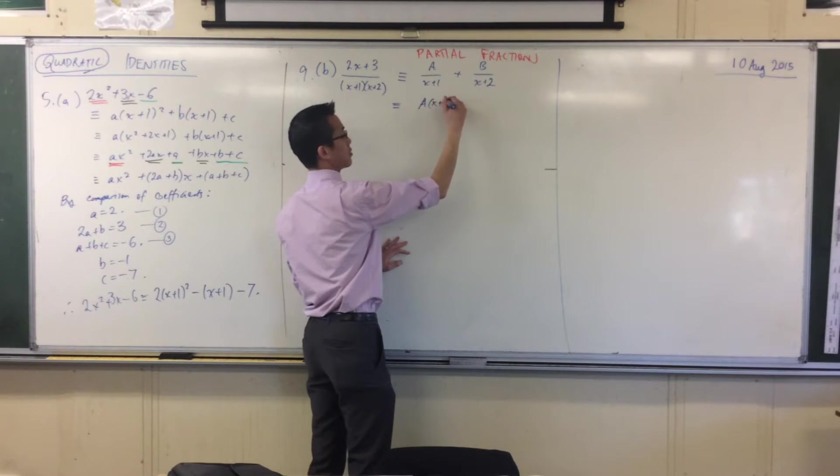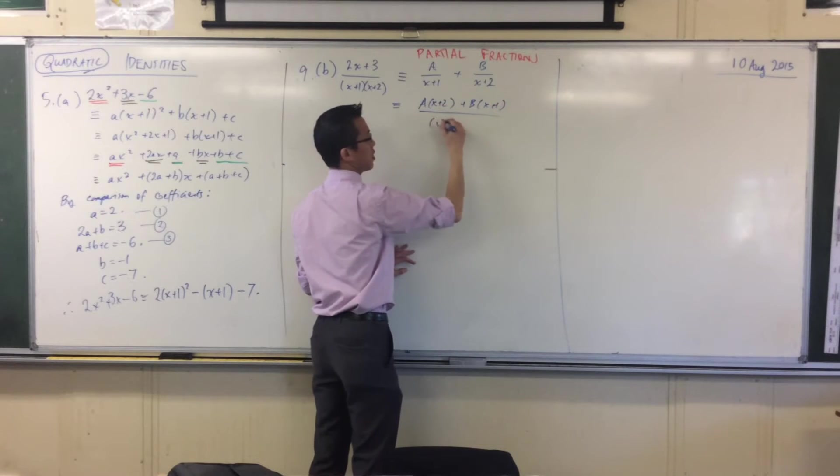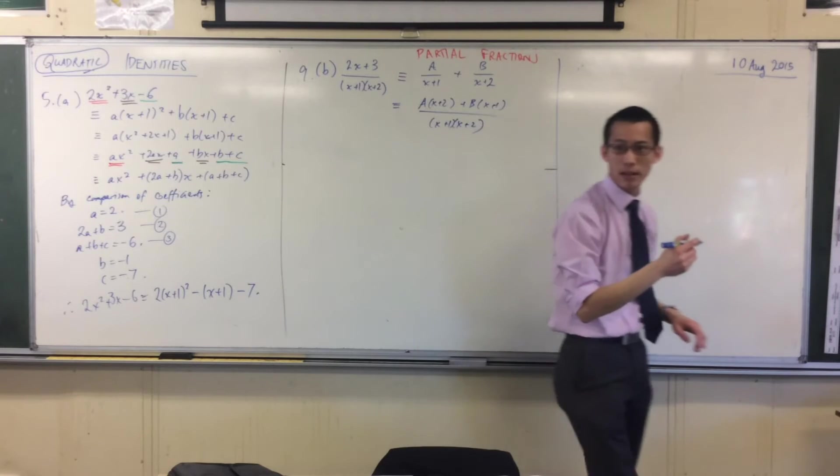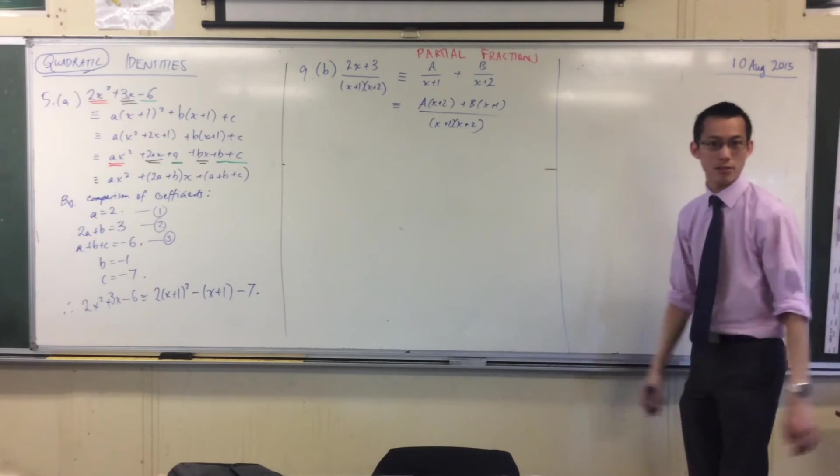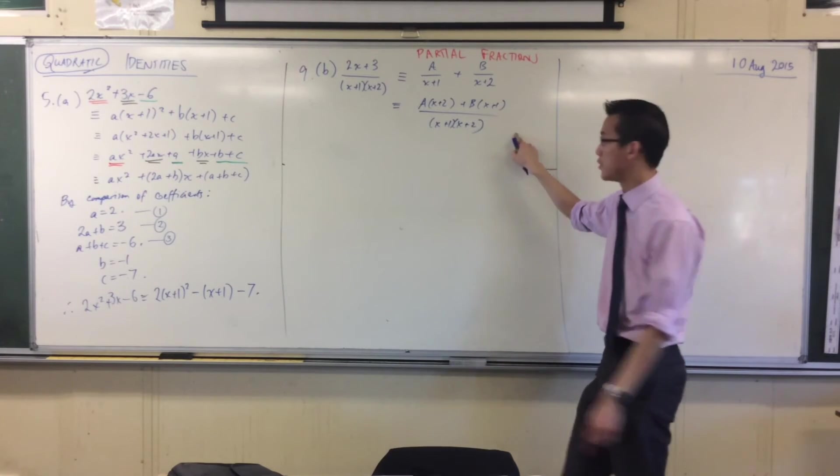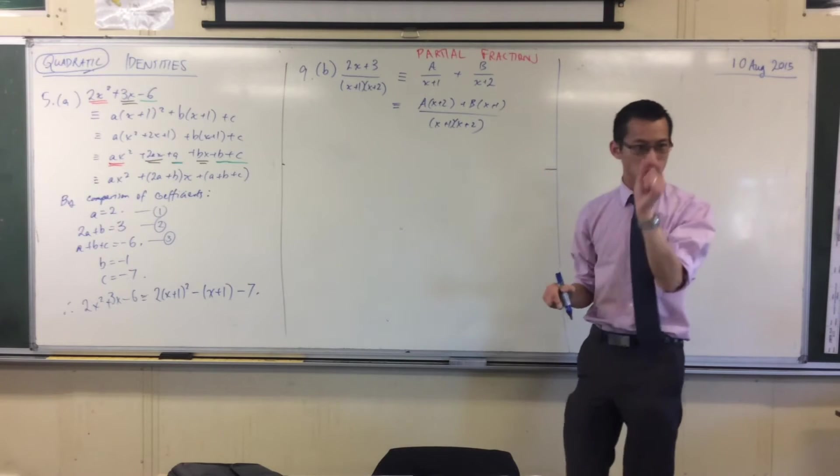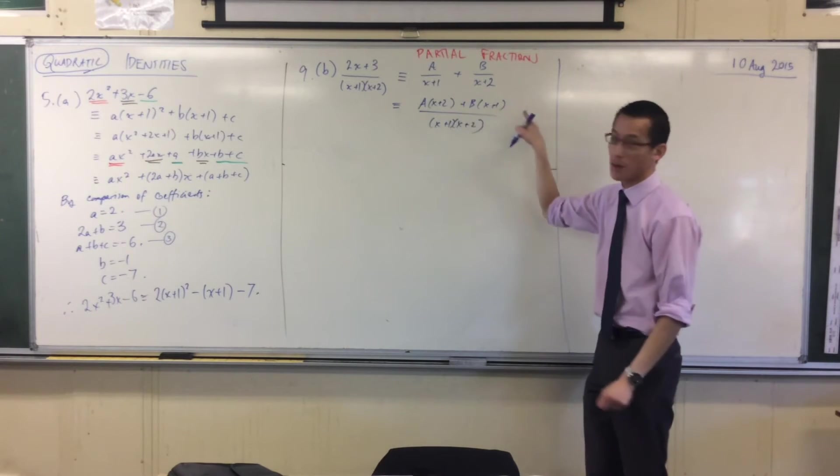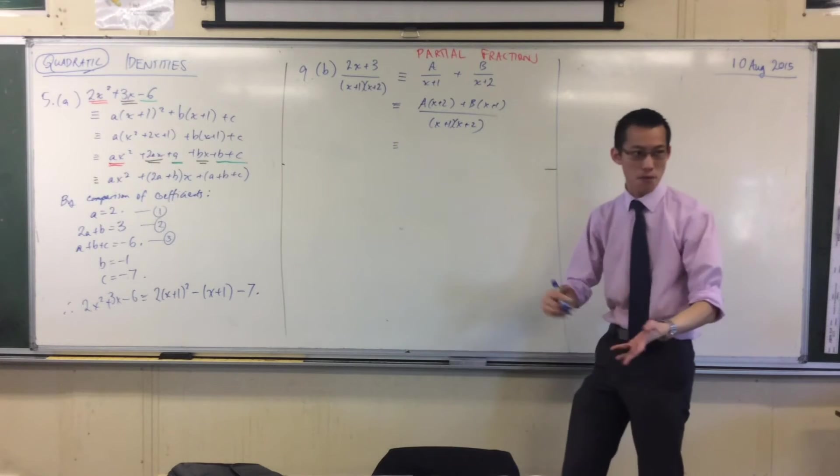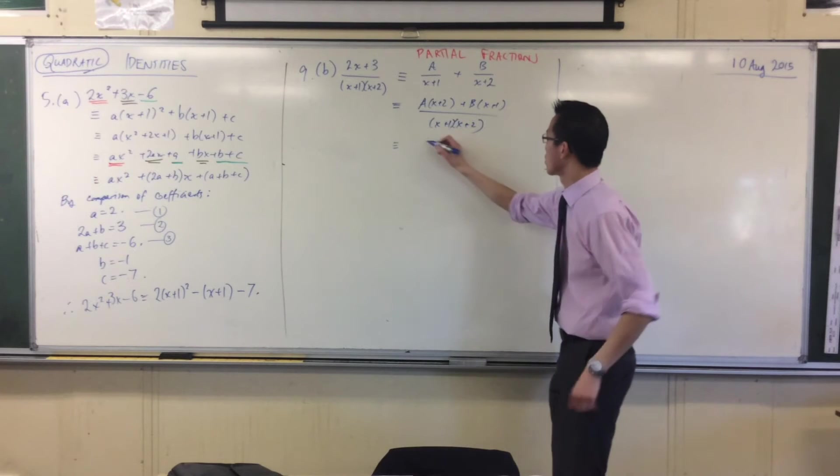So this first guy is going to be ax plus 2, and the second one will be bx plus 1. Are you content with that? I've just added two fractions. Now that I've written this line, I can compare the coefficients of the numerators, because the denominators are identical. Maybe I should just do one more step, and what you've got on the top here is a linear function. So let's just put it into a nice neat form that makes the comparison of coefficients just a bit clearer.